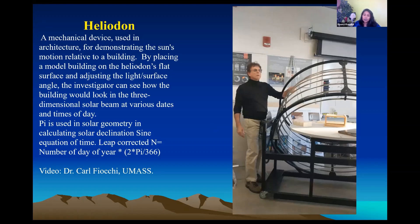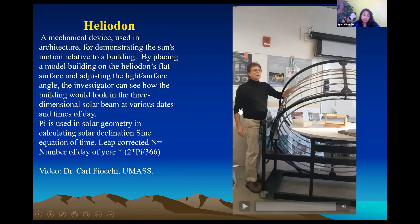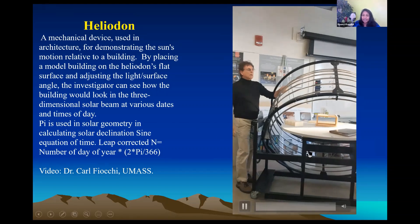One of the field trips that we went to was the UMass Green Building, where we saw a mechanical device called a Heliodon that's widely used in architecture for demonstrating the sun's motion relative to a building. By placing a model on a flat surface and adjusting the light angle, scientists can see how the building will look at different days and times of the year. And here's Dr. Carl Fiocchi from the University of Massachusetts explaining this device.